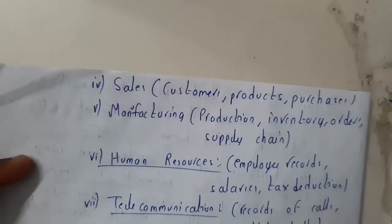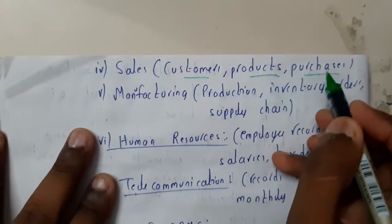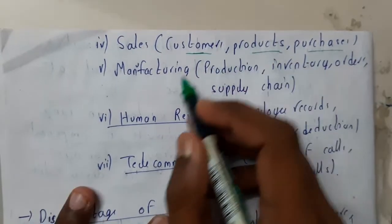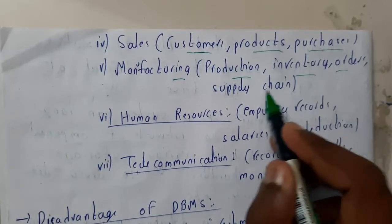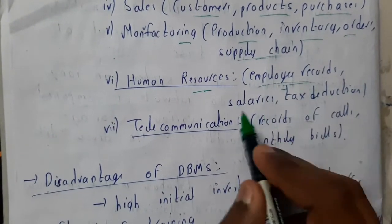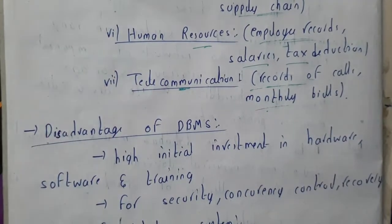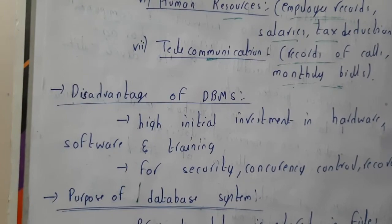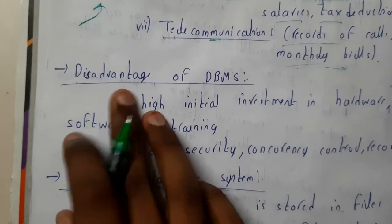Similarly, databases are used in sales for customers, products, and purchases; in manufacturing for inventory, orders, and supply chain; in human resources for employee records, details, and salaries; and in telecommunications for storing call logs and bill histories. We use DBMS to retrieve all this data.